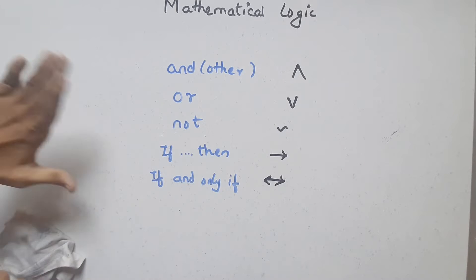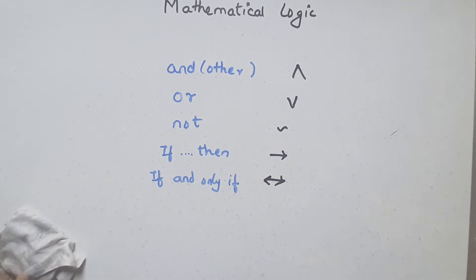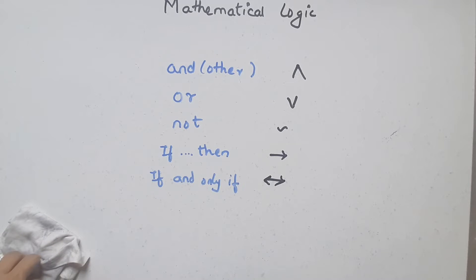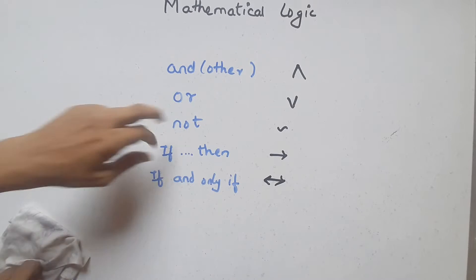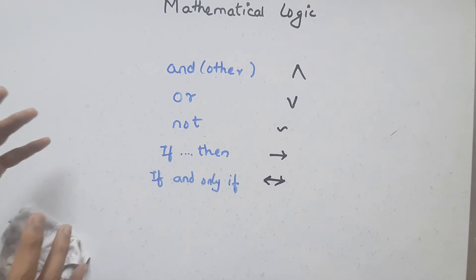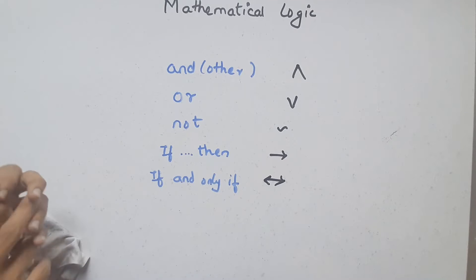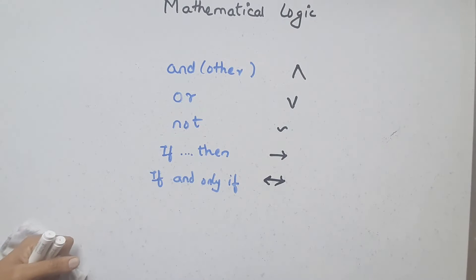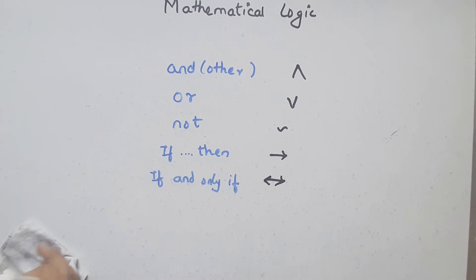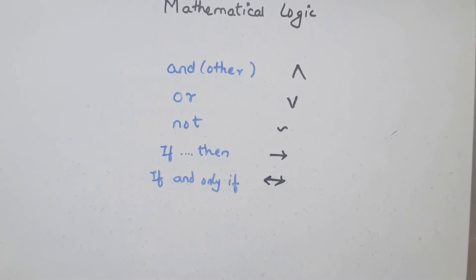The most important things to remember are the symbols and their truth tables. Now, how do we use truth values? Every symbol has a set of rules. For AND: if both P and Q are TRUE, the result is TRUE. If any one of them is FALSE, the result is FALSE. I'm going to make the truth table now — pause the video and remember it.